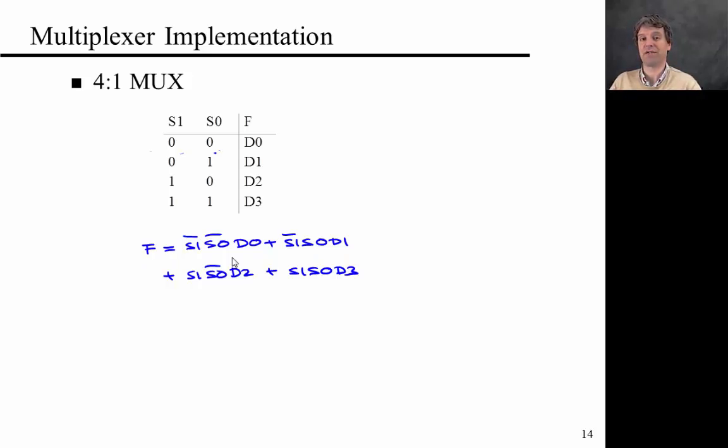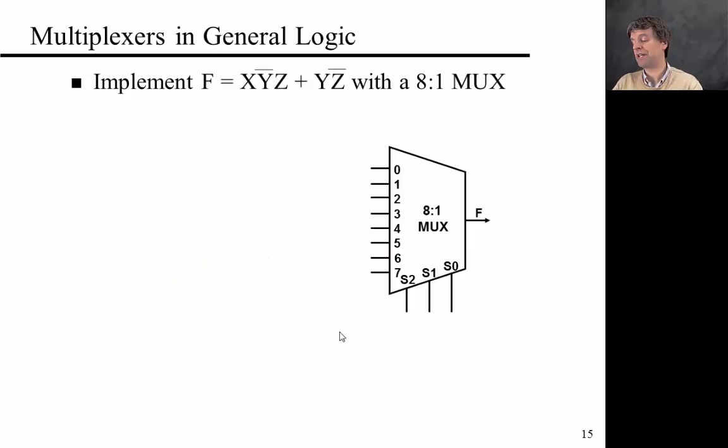What's interesting is we'll see that we can also do essentially general logic with a multiplexer. So briefly solve this problem for yourself. Think about how you would realize the function F equals XYZ + YZ with a 2-to-1 multiplexer.